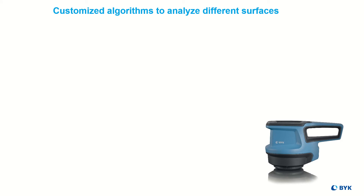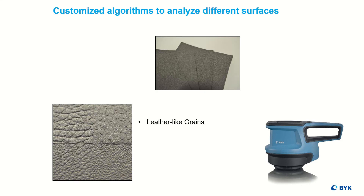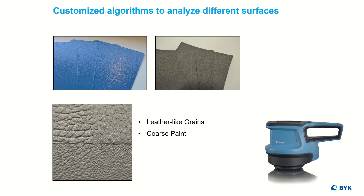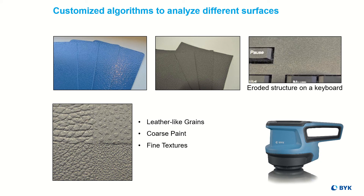To analyze different structure types, three applications can be selected: leather-like grains, as explained before; coarse paint, typically selected for powder coatings; and fine textures for paint or plastics.